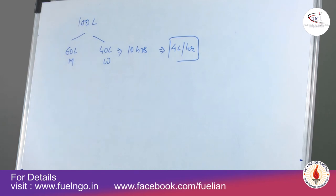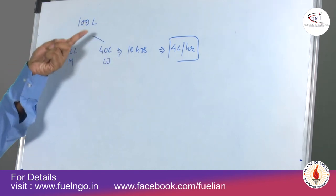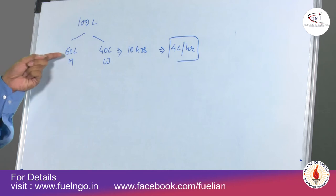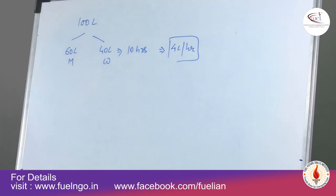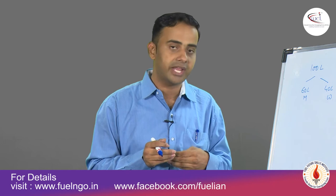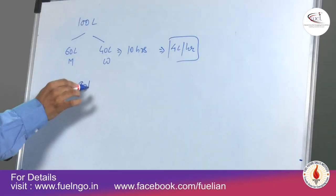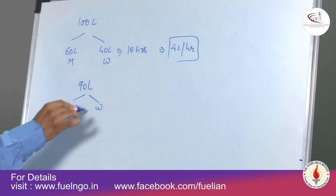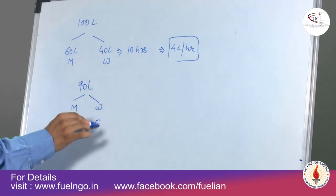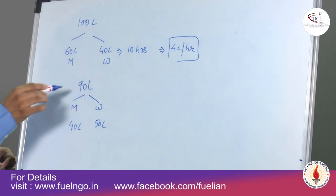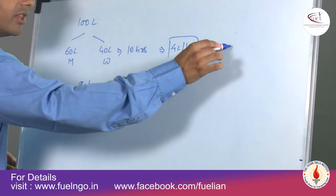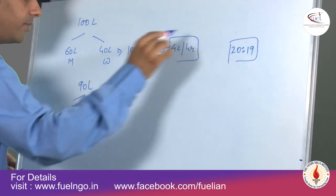For how long must the machine operate on a 90 litre solution of milk and water in the ratio 4 is to 5? So 40 litres is milk and 50 litres is water. The question asks how long it must operate so that the resultant ratio is converted to 20 is to 19.